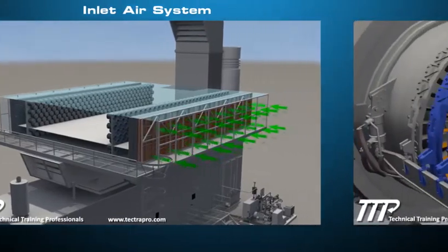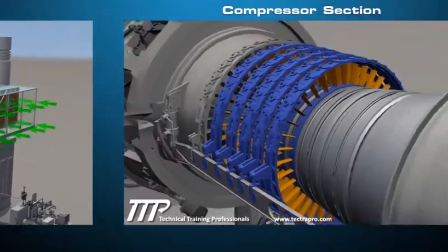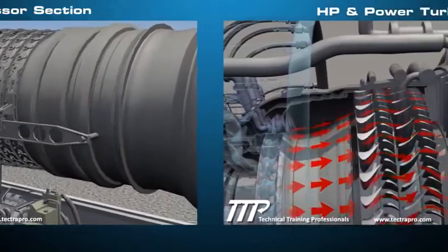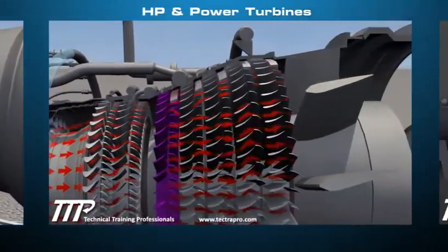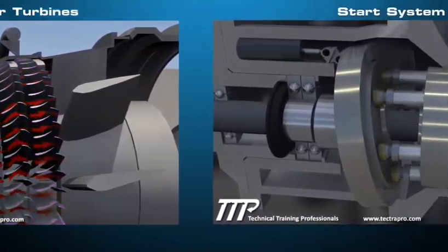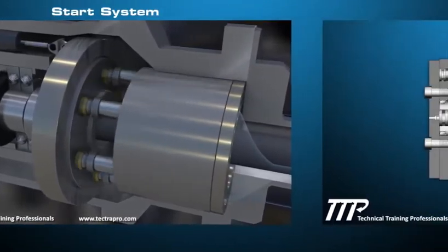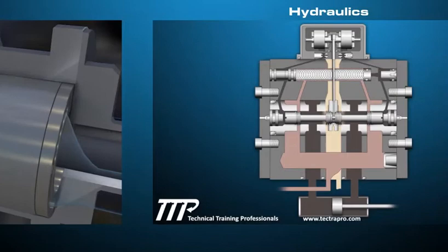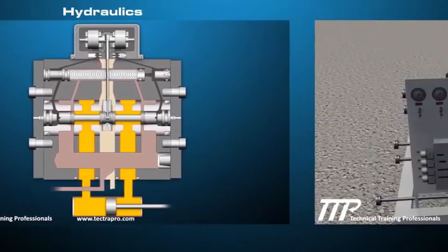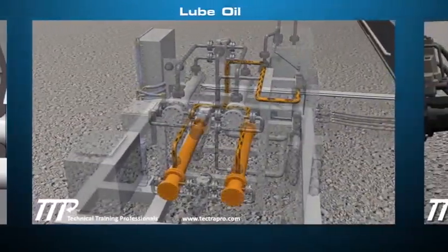The main systems include the inlet air system, compressor section, HP and power turbines, start system, hydraulics, lube oil, and fuel gas control.